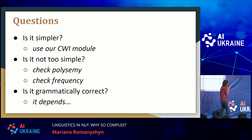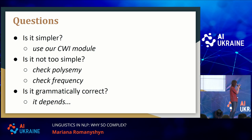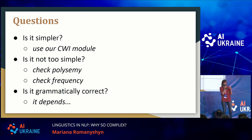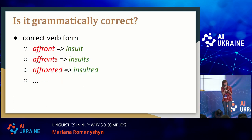So we should ask ourselves: is the synonym we're using actually simpler? We already built a complex word identification module, so we can use our classifier to check whether the synonym is simple or not. How do we define if the word is not too simple? We look at the gap — is this synonym much more frequent than the original word? If it is, maybe it's too simple. Or we could check polysemy: the word "habit" has many meanings — good habits, bad habits, drug habits, alcohol habits, and so on — so maybe it's too polysemous to put in this context.